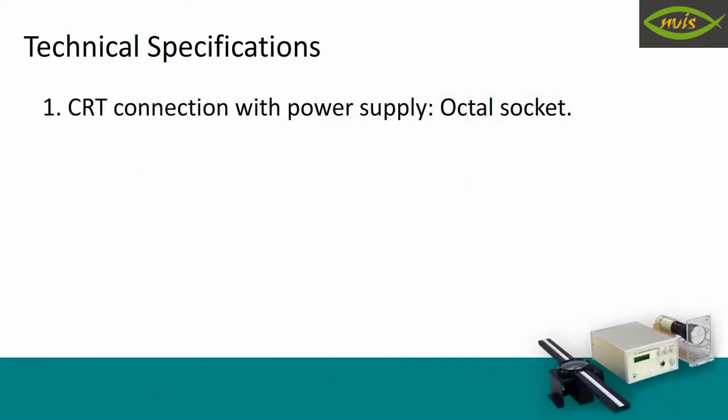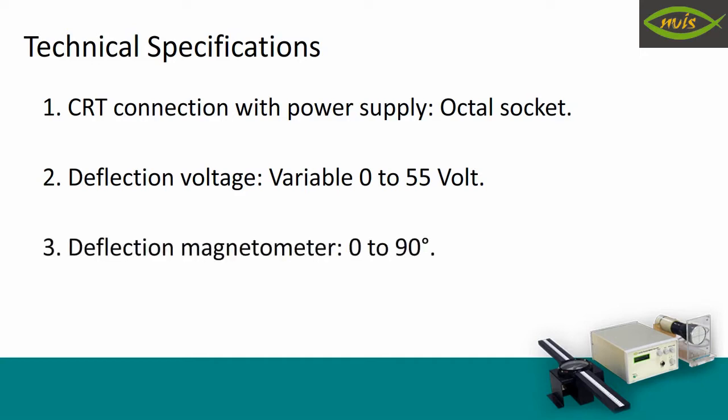The various technical specifications of Envis 6103 are CRT connection with power supply, octal socket, deflection voltage variable 0 to 55 volts, deflection magnetometer 0 to 90 degree.